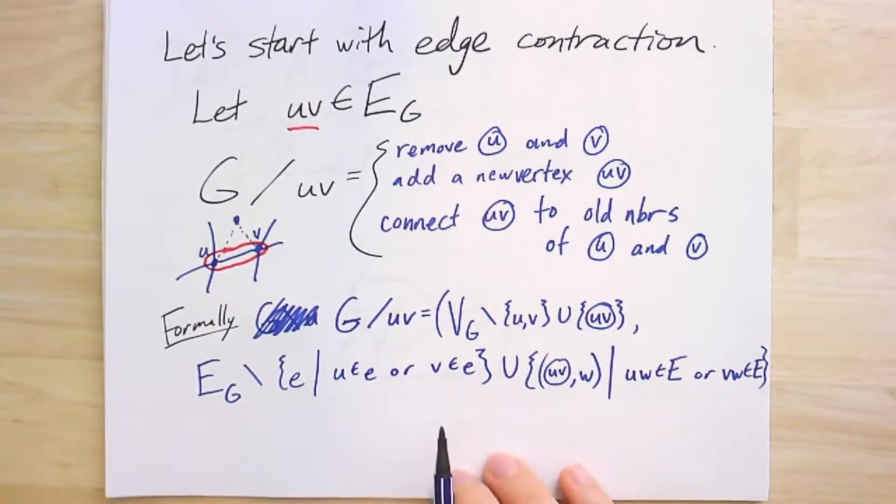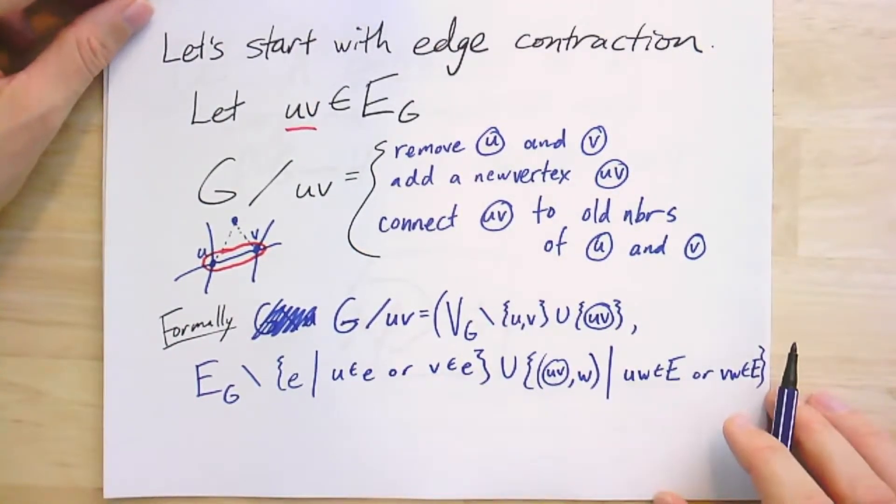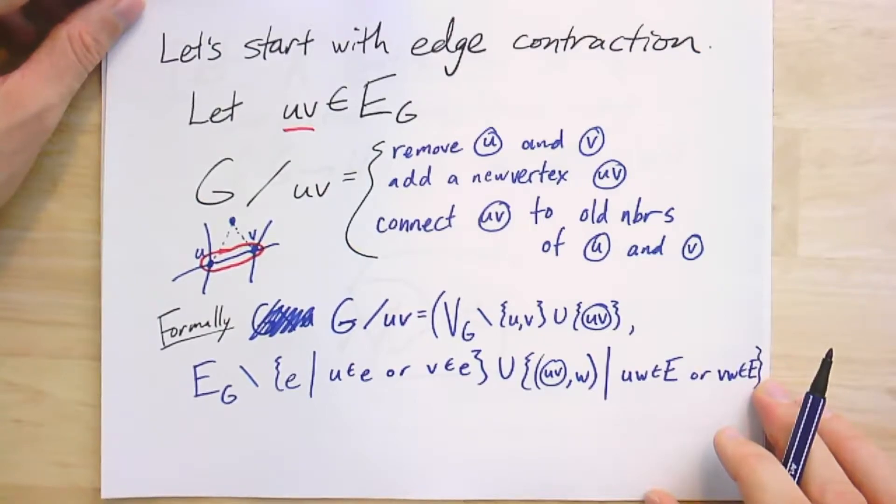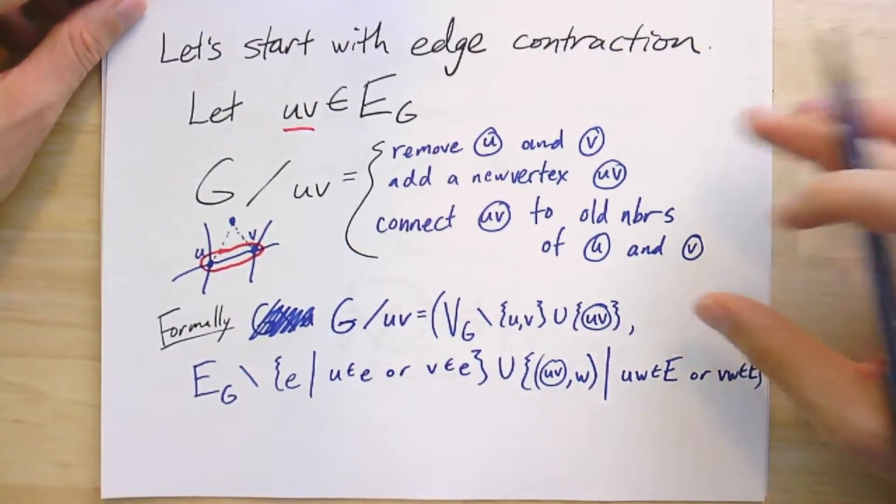You will see this as a standard definition in textbooks. I'm going to give you a different perspective just in terms of simplicial maps that I think is a little bit better. But at some point, it's almost always useful to be able to go back to the idea of the contraction as happening this way combinatorially.